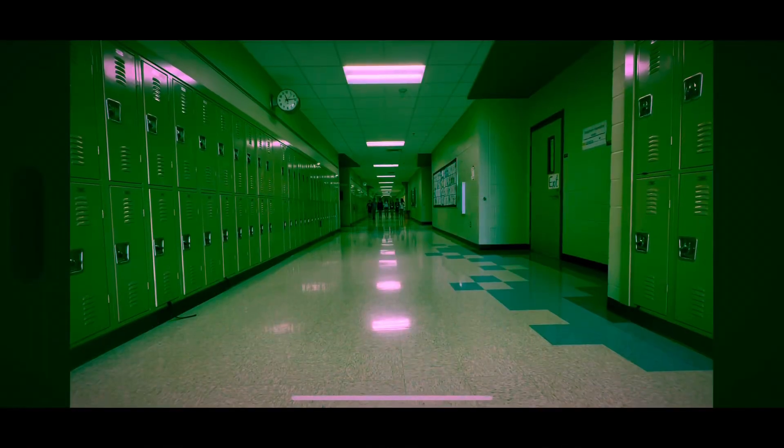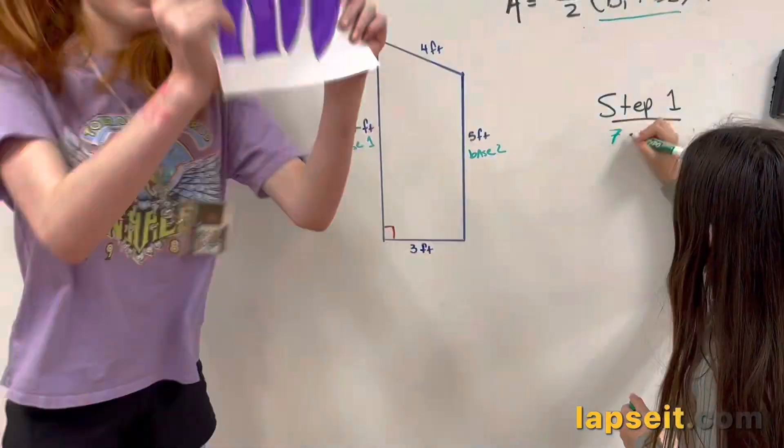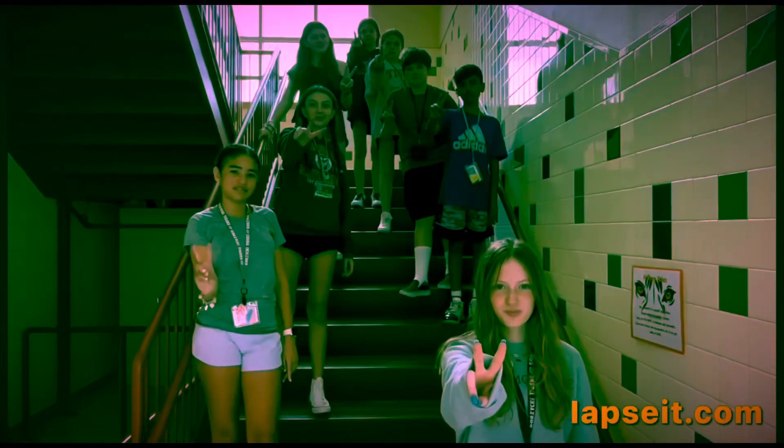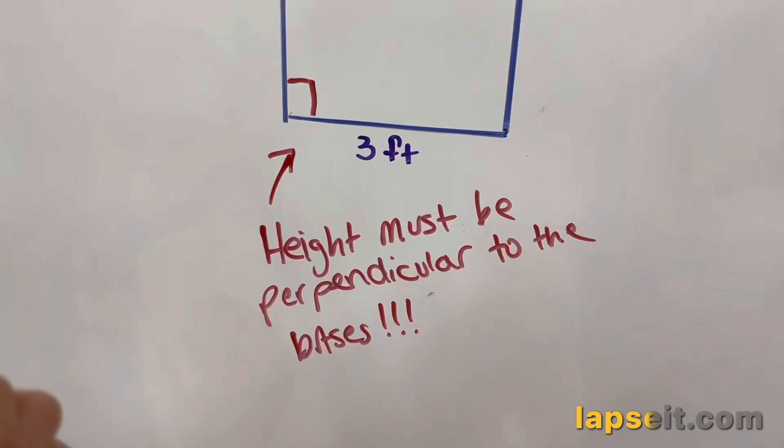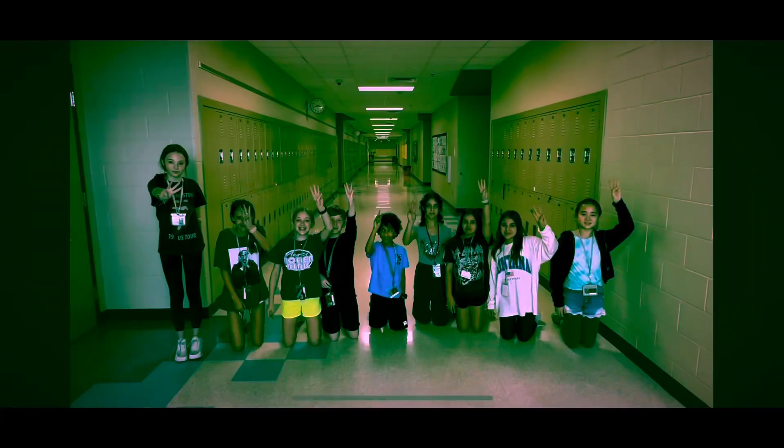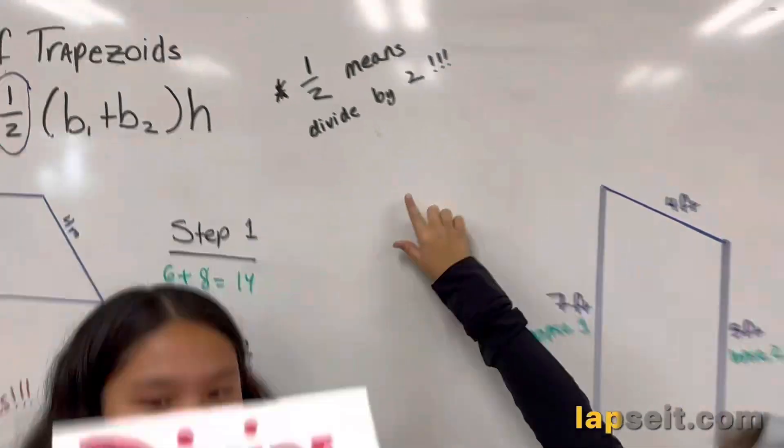Let's go through that again. Step one: Add the bases, my friend. That's where you begin. Step two: Here's the time when you're gonna multiply. Multiply the sum times the height. Step three: Never forget the last thing to do. You gotta divide that product by two.